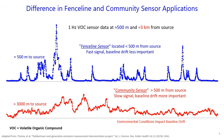We are defining fenceline sensors — the blue signal on this slide — and community sensors — the red signal on this slide — based on the distance of the sensor from the source. We consider a sensor within roughly 500 meters from the source to be a fenceline sensor. Sensors at this distance need to be fast so they can pick up quick spikes and fast-moving plumes. Baseline drift is not as important at this distance because it can be removed with an algorithm that shows only the spikes and removes sections of drift.